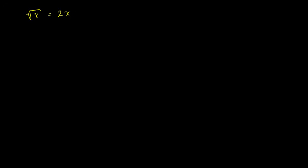Let's say I have the equation: the square root of x is equal to 2 times x minus 6. Whenever we do these radical equations, we want to isolate at least one of the radicals. There's only one in this equation. I have the square root of x isolated on the left-hand side. Then we square both sides of the equation.